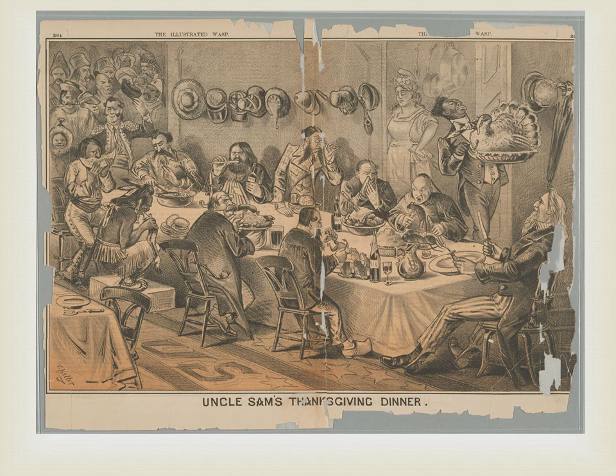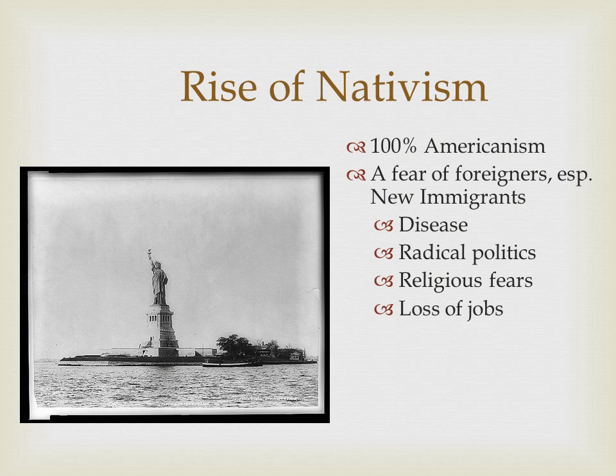Here is the second 'Uncle Sam's Thanksgiving Dinner' cartoon — a direct response to the 1869 one I showed you earlier. Notice: you've got white Uncle Sam at the head of the table, an African American serving the food, it's a very rowdy affair with all kinds of stereotypes, and hordes of people coming in the front door. This is not a nice image — it is a very negative image of immigrants. As you can see, tastes are starting to change in America.